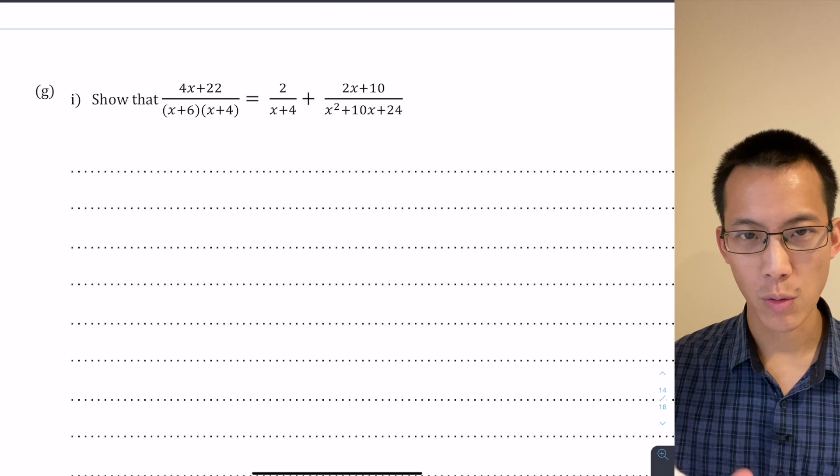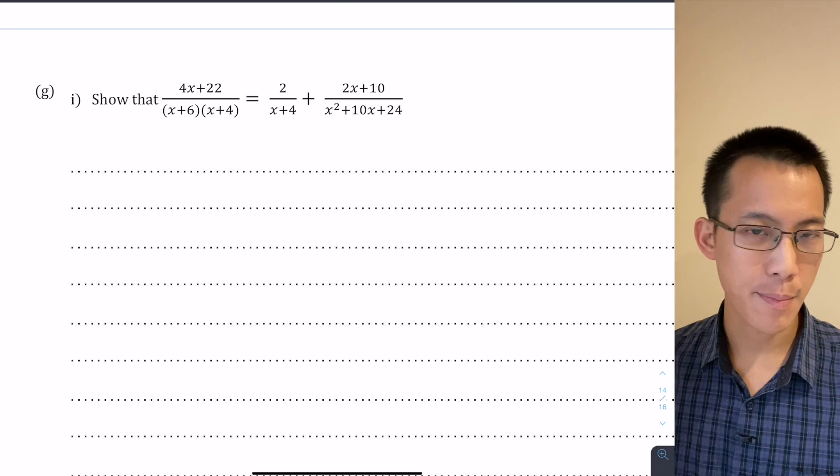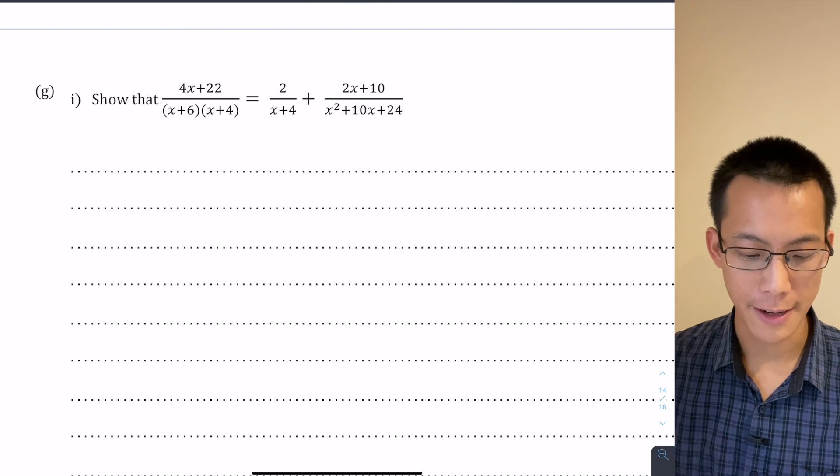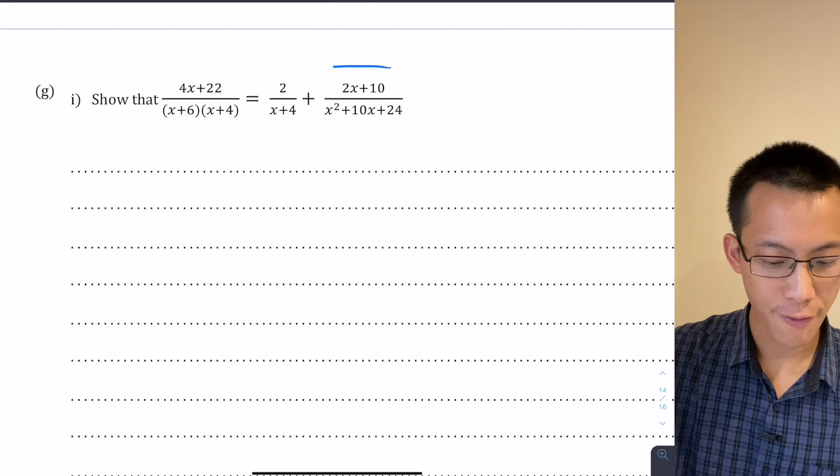You need to simplify, manipulate, and adjust it so that it looks like the other side. The thing you cannot do is start from this line here and then just start manipulating.